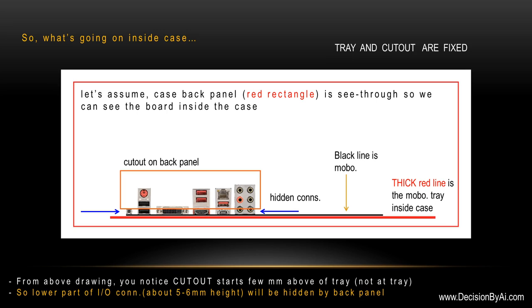So what is happening? Let's assume the case back panel — the red rectangle — is see-through so we can see the board inside the case. On the right side, the thick red line is the motherboard tray inside the case. The black line is the motherboard. On the left side is the cutout on the back panel. From the drawing, you notice the cutout starts a few millimeters above the tray, not at the tray. So the lower part of the IO connector — about five to six millimeters in height — will be hidden by the back panel. That's the reason we cannot see the whole connector. It's there; you just cannot see it because it's covered by the back panel.